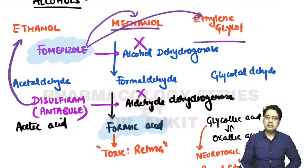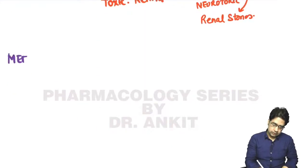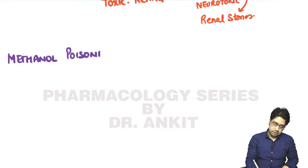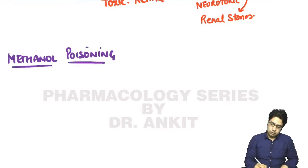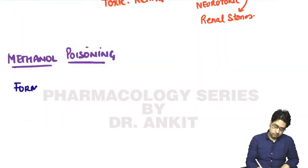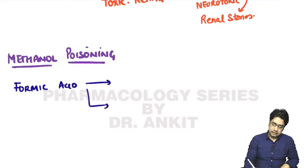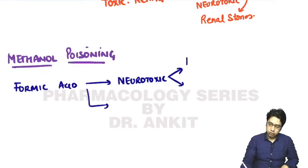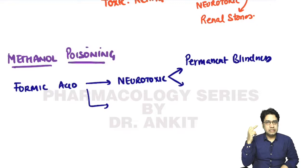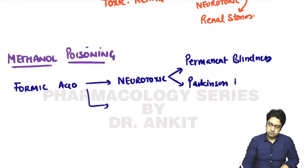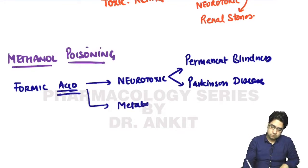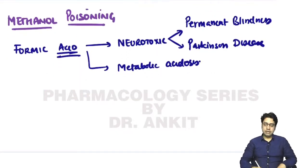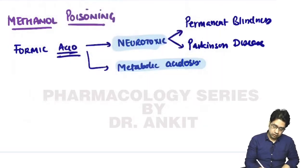In methanol poisoning, the main problem is that methanol forms formic acid via the dehydrogenase enzyme. Formic acid is highly neurotoxic - it damages the retina leading to permanent blindness, and damages neurons of the basal ganglia which can lead to Parkinson's disease. Being an acidic substance, formic acid also leads to metabolic acidosis.